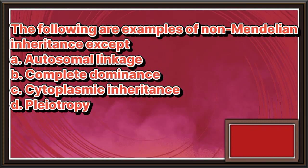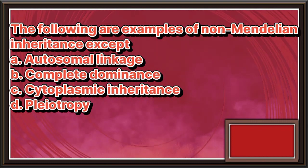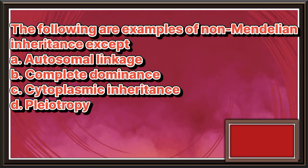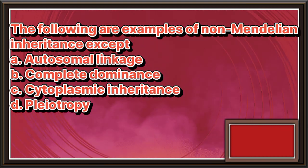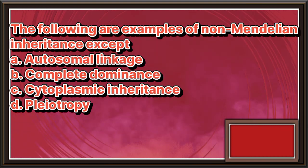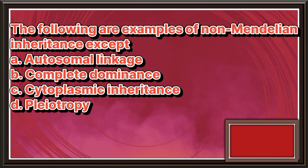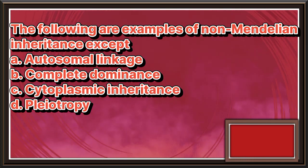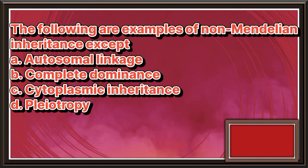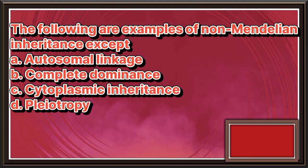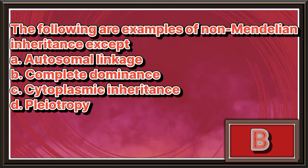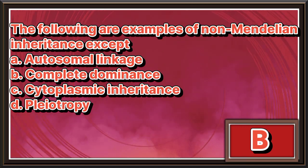The following are examples of non-Mendelian inheritance, except. a. Autosomal linkage. b. Complete dominance. c. Cytoplasmic inheritance. d. Pleiotropy. The answer is letter b.